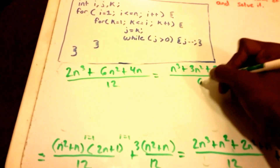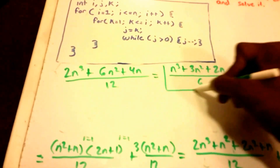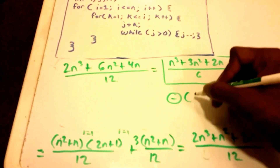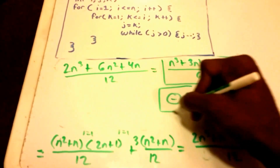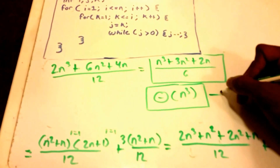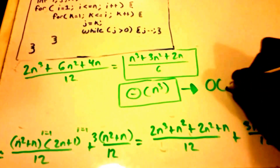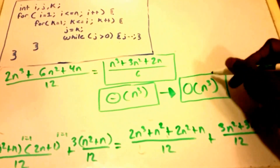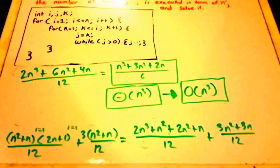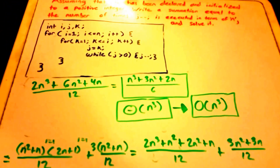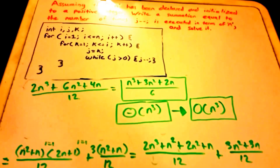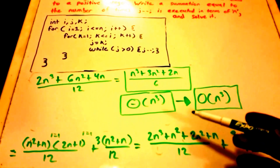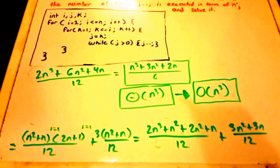And that's our answer — all divided by 12. This is big Theta of n³, and of course that implies it is also big O of n³. Alright, thank you guys, I hope you enjoyed this video. Please leave likes, comments, and questions. Don't forget to subscribe and share this with anybody who found it helpful. Thanks as always for watching, and I'll see you all in the next video.